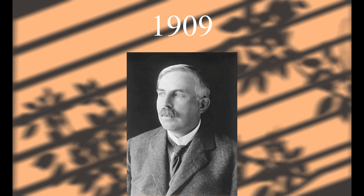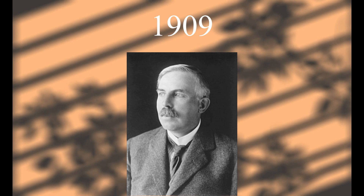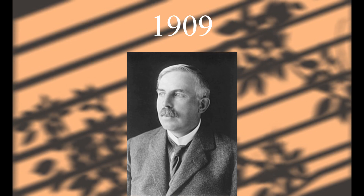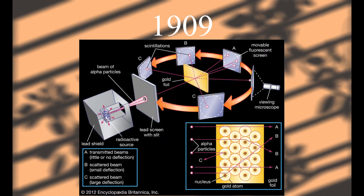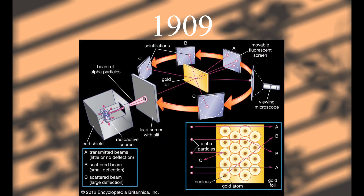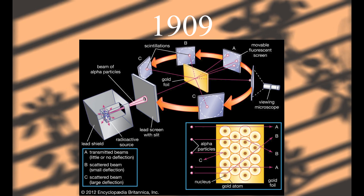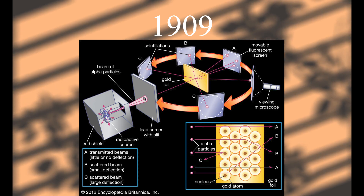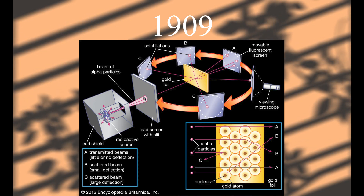Rutherford did a lot for atomic theory, but by far the most impactful was the discovery of the proton. The discovery was made through the gold foil experiment, which consisted of shooting alpha particles at a thin sheet of gold foil. Many of the particles deflected from the sheet of foil, which showed how the mass of the atom was a concentrated point of positive charge.